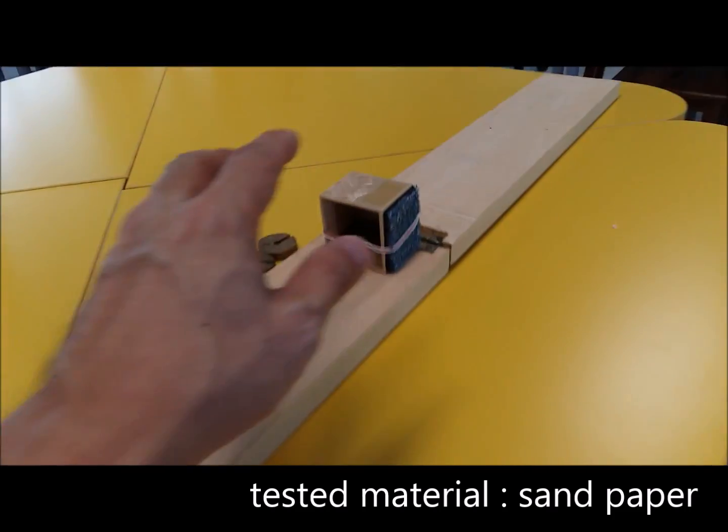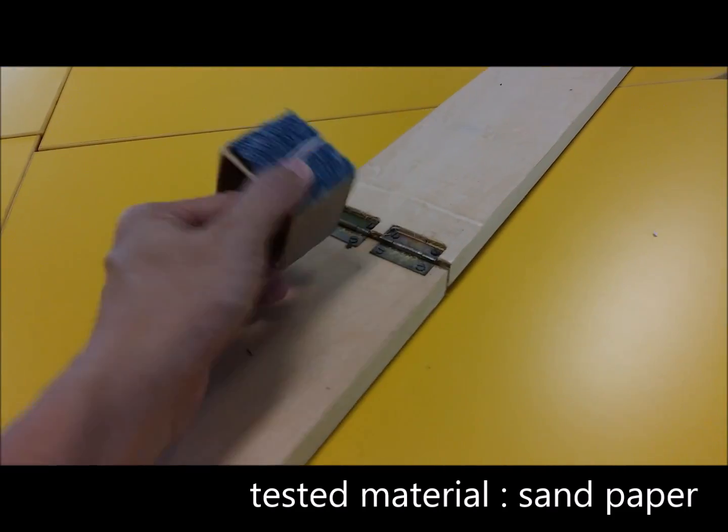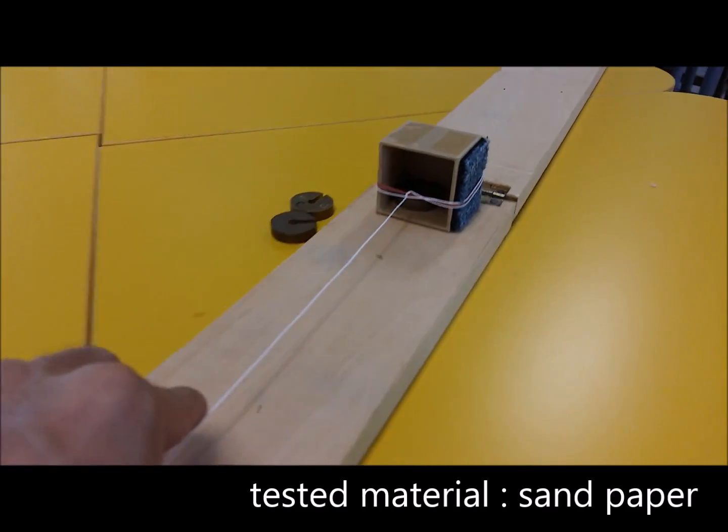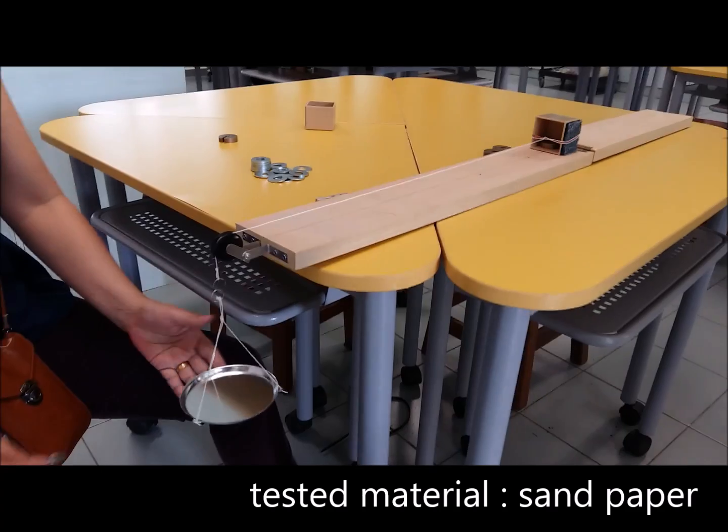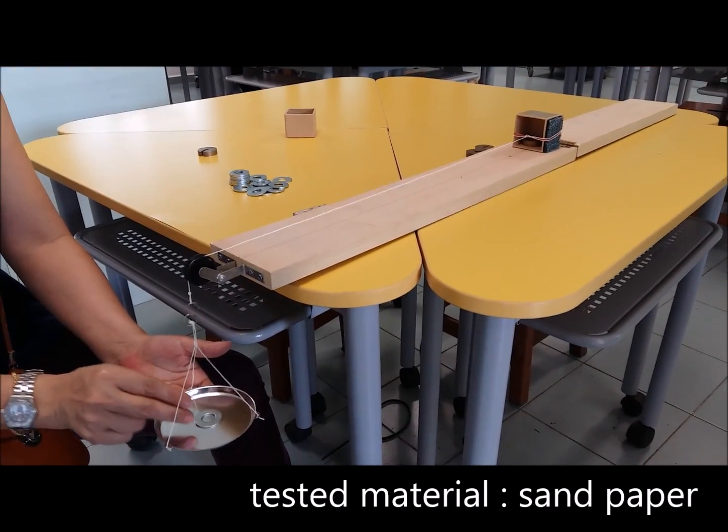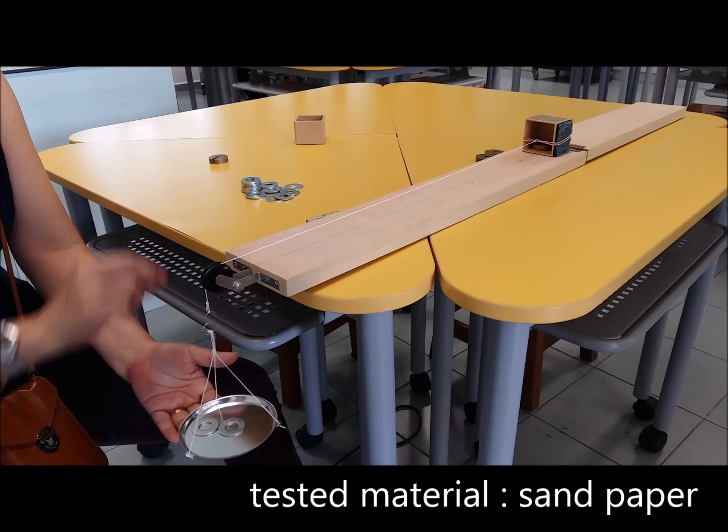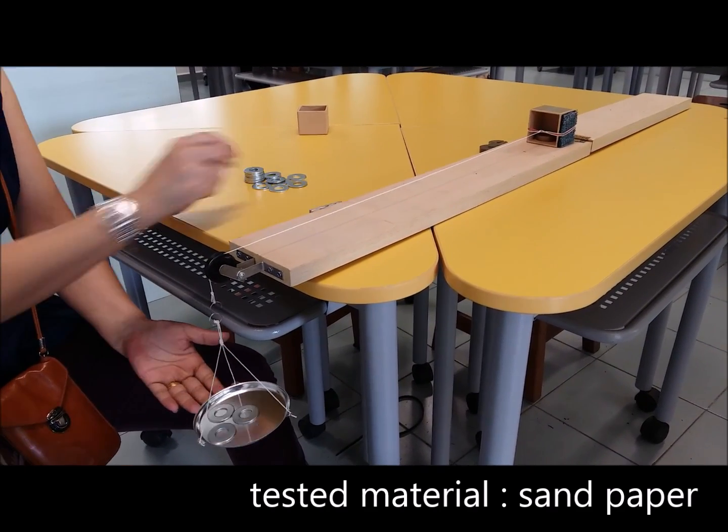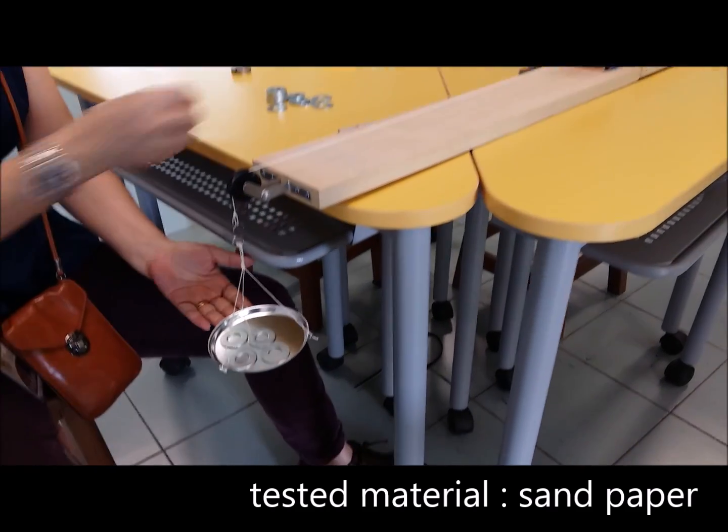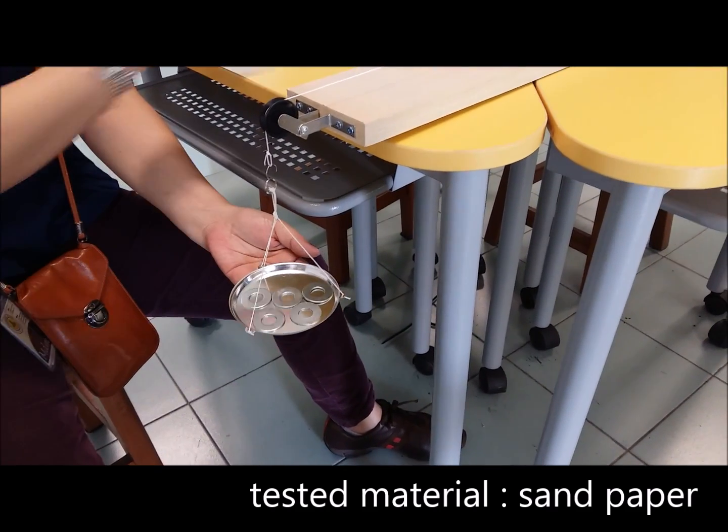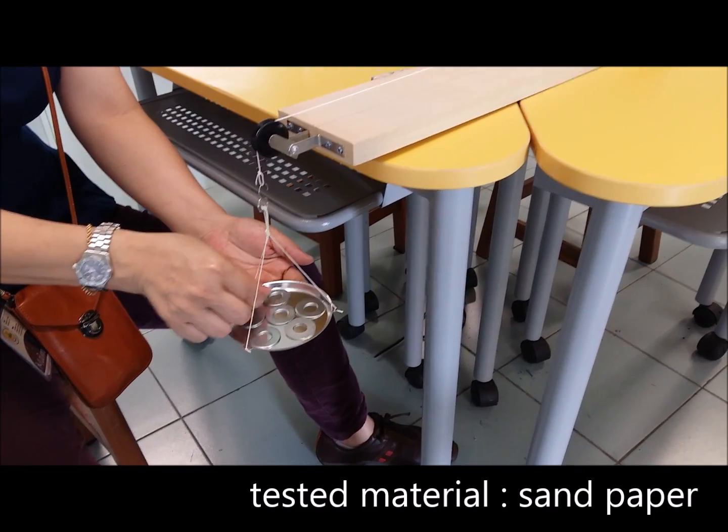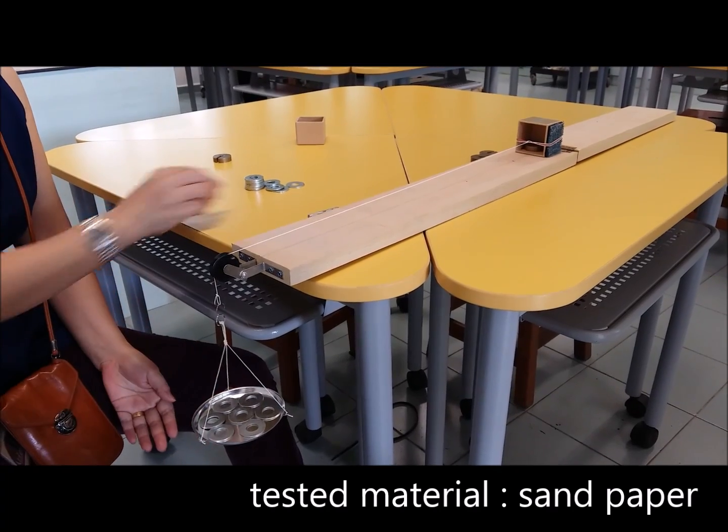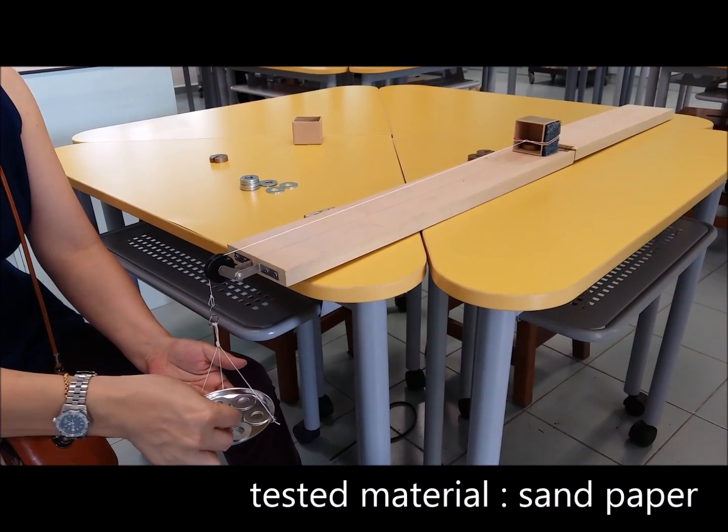Now we change the surface to sandpaper. The weight of 50 grams remains the same. Let the weighing begin. One, two, three, four, five, six, seven, eight.